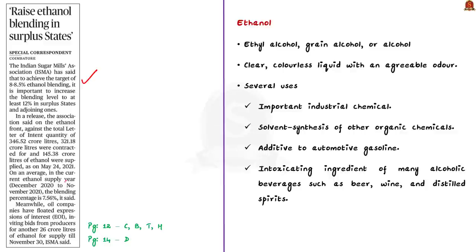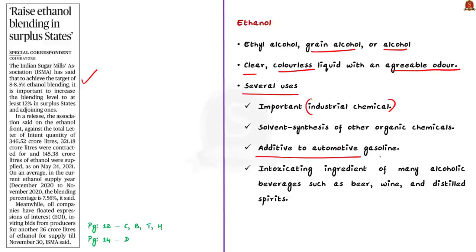Ethanol, also called ethyl alcohol, grain alcohol, or alcohol, is a clear colorless liquid with an agreeable odor. It is an important organic chemical compound with several uses — as an important industrial chemical, as a solvent in the synthesis of other organic chemicals, as an additive to automotive gasoline, and as the intoxicating ingredient in many alcoholic beverages such as beer, wine and distilled spirits.